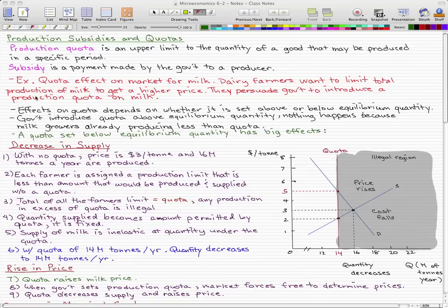So for example, the quota effect on the market for milk. We're going to have dairy farmers who want to limit the total production of milk to get a higher price. So they persuade the government to introduce a production quota on milk, and that's the example that I have here in red.